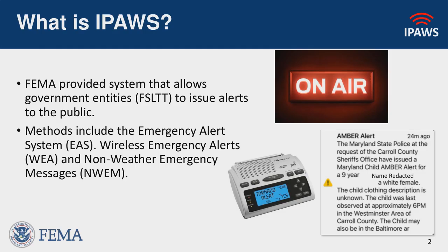I'm sure you're all familiar with this system because you've definitely probably received an alert either over radio, TV, or on your cell phone — maybe an Amber Alert, weather alert, or from your local alerting authority. IPAWS stands for the Integrated Public Alert and Warning System. It is basically the modernization of alert and warning and notification, building on the backbone of our system, which is the Emergency Alert System. It is available to government entities — federal, state, local, tribal, and territorial users — to send messages.